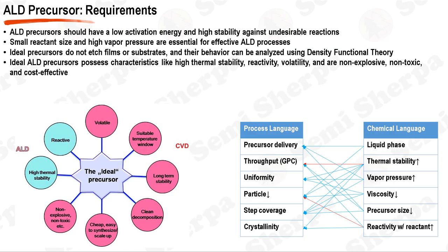Atomic layer deposition, ALD, is a highly controlled process, and a crucial part of this control comes from the selection of precursors. There are several key criteria to consider when selecting an ALD precursor. First and foremost, the precursor should have a low activation energy for chemical reaction, ensuring that it can readily react with the substrate during each pulse of the ALD process. At the same time, the precursor should have a high thermal stability against undesirable reactions, meaning it should not decompose on its own in the reaction chamber or during storage. Unwanted decomposition can lead to impurities in the deposited film and can also pose safety risks.